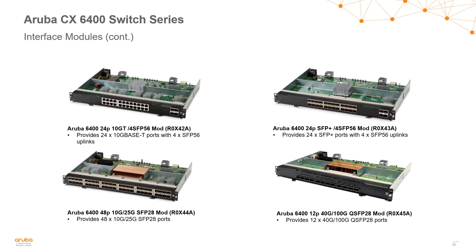Here we have the aggregation and core modules for the 6400 series. On the top row we can see two 24-port 10 gig options: a 10 gig Base-T option on the left and an SFP+ option on the right, both with four SFP56 uplinks. On the bottom left we have our 48-port 25 gig module, which also supports 10 gig. And on the lower right we have our 12-port 100 gig module, which also supports 40 gig.